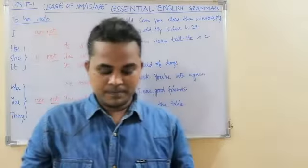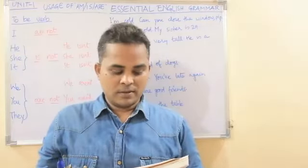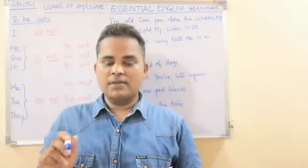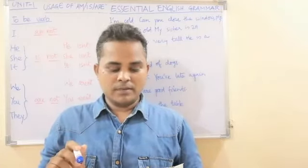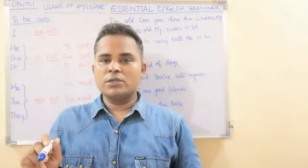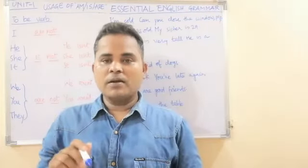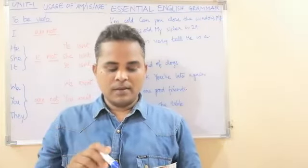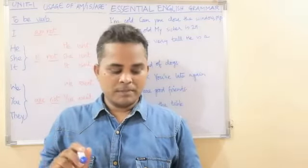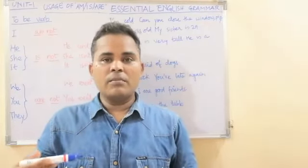Let's have a few more examples. I am tired but I am not hungry. Tom isn't interested in politics. He is interested in music. Jane isn't at home at the moment — she is at work. Those people aren't English — they are Australian. It's sunny today but it isn't warm. These are examples of usage of am, is, are.